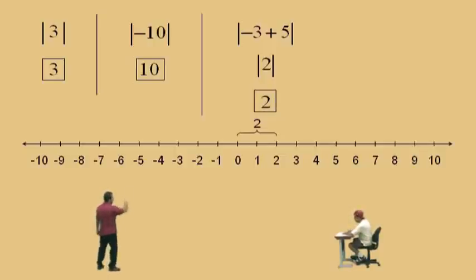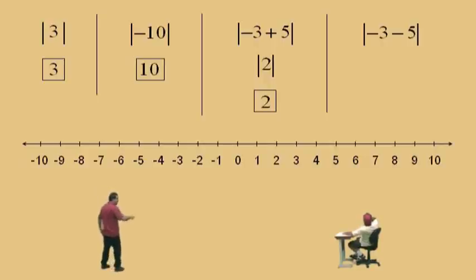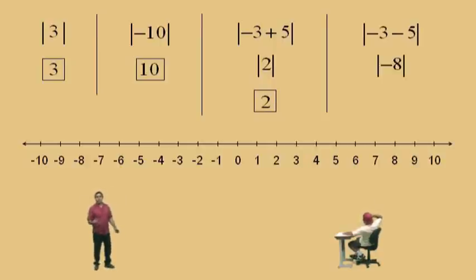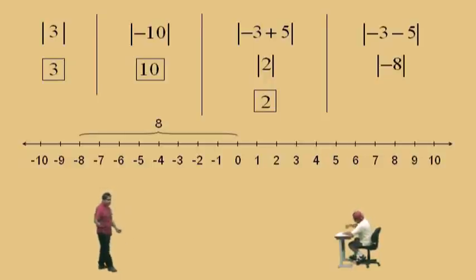Now, over there, absolute value of negative 3 subtract 5. Again, do the operations that are inside the absolute value first. Charlie, what's negative 3 subtract 5? Negative 8. And so now, what is the absolute value of negative 8? 8. It's 8.